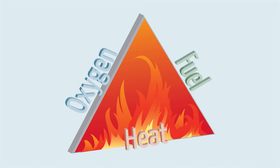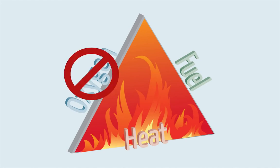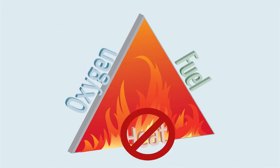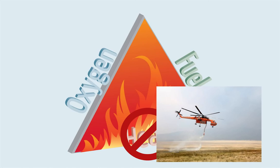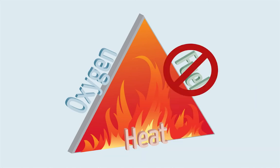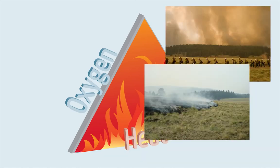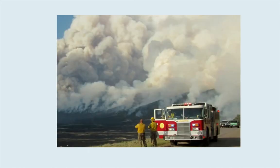Firefighters can use the fire triangle to help extinguish fires. They can remove oxygen by smothering the fire with flame retardant, such as slurry dropped from planes. They can remove heat by cooling the fire with water. And they can remove fuel by digging a fire line or starting a backfire to starve the fire of fuel.